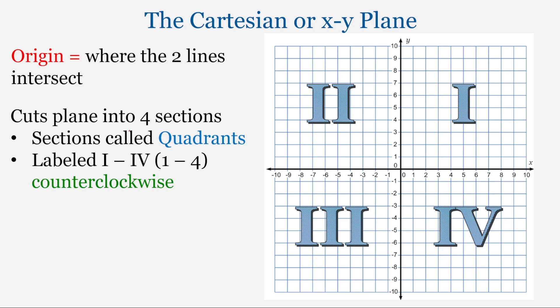And we label the quadrants one through four. And typically we use Roman numerals to label these quadrants. And they're labeled one through four, starting in the upper right quadrant and then moving counterclockwise through all four quadrants, ending in the lower right quadrant with quadrant four.